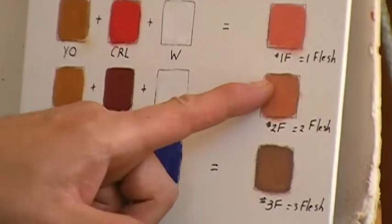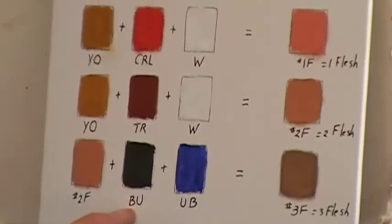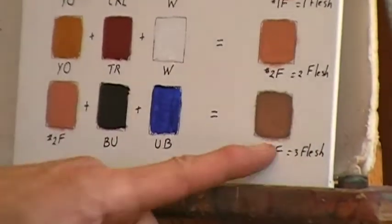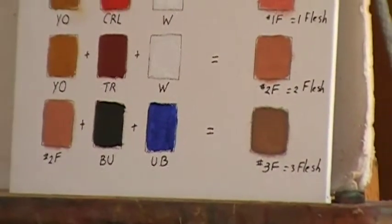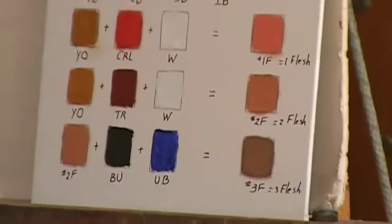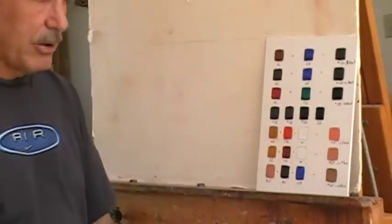And to make it even duller and darker I could take this flesh tone and mix in a little burnt umber and ultramarine blue and I get even a darker flesh tone. And depending on the amounts I mix in I could match any color skin in existence with just this limited palette.